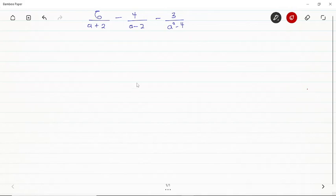Hello and welcome to CERBwatchTV. Today we have a beautiful question on algebraic fractions I want us to look at. So the question is 6 over a plus 2 minus 4 over a minus 2 minus 3 over a squared minus 4, and we are just to simplify.